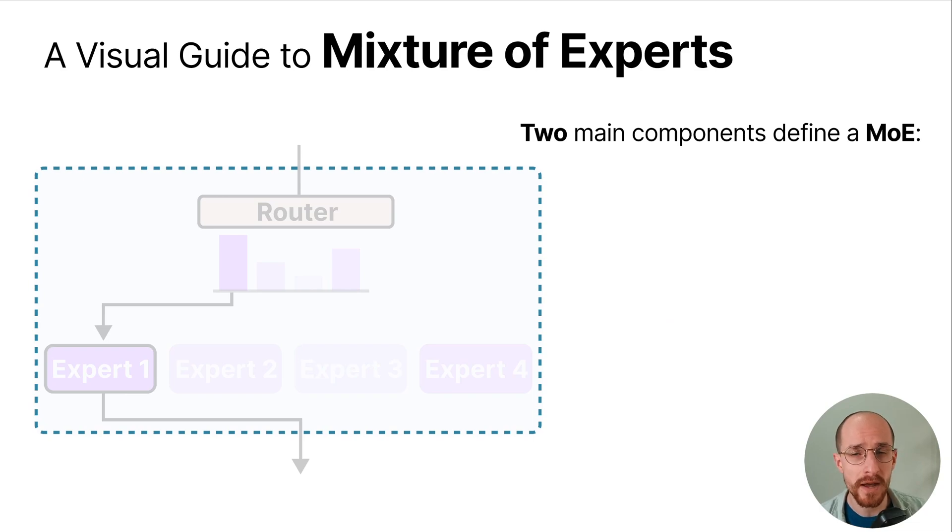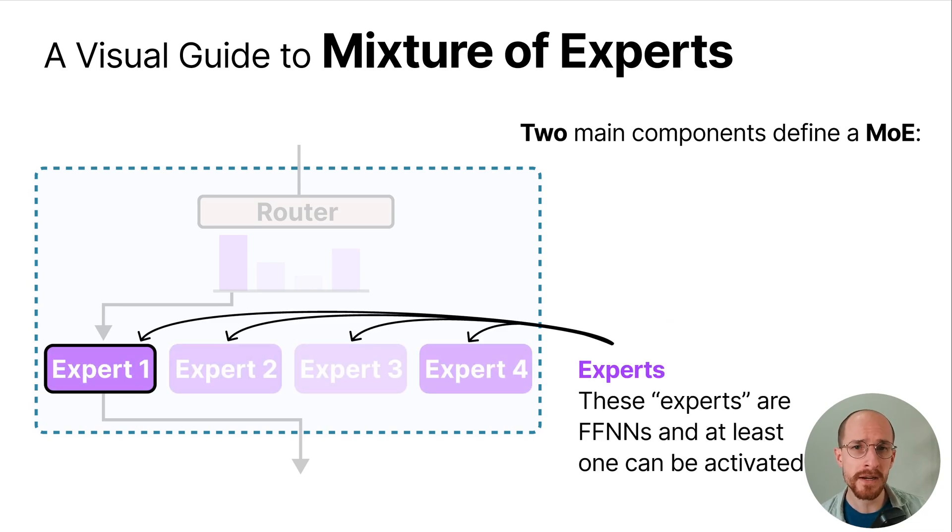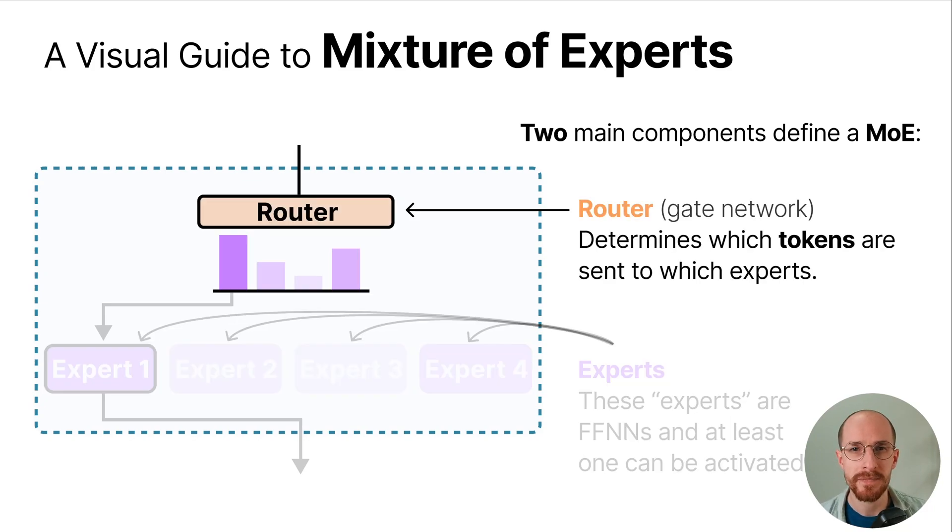Two main components define a MoE. The first are experts and these experts are feed forward neural networks and at least one can be activated. The router or the gate network determines which tokens are sent to which experts.